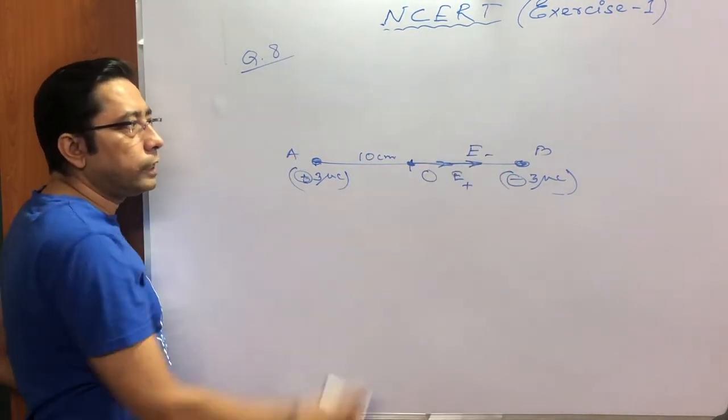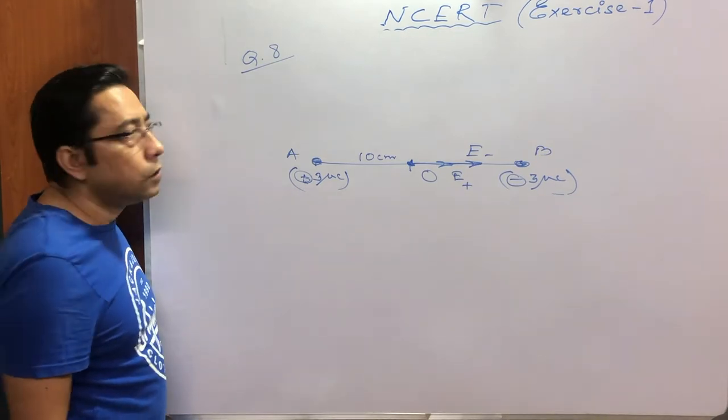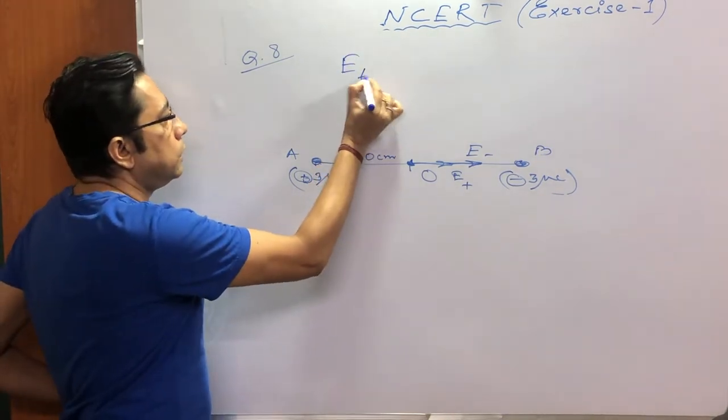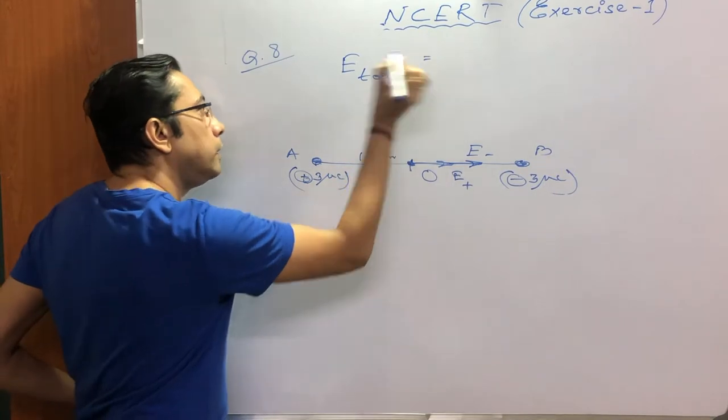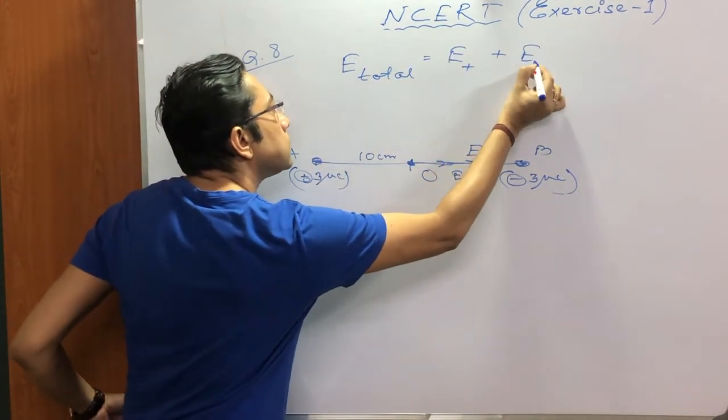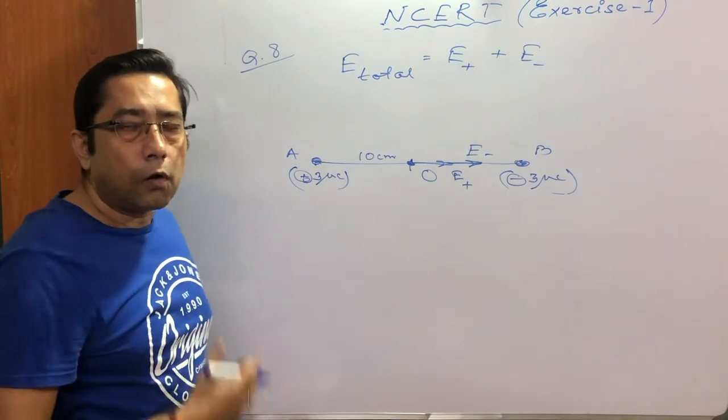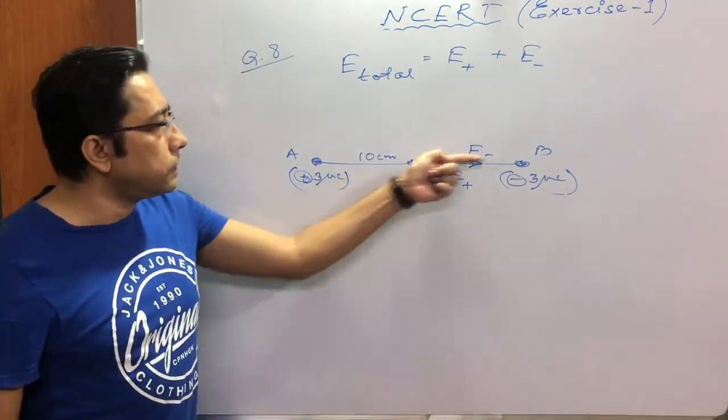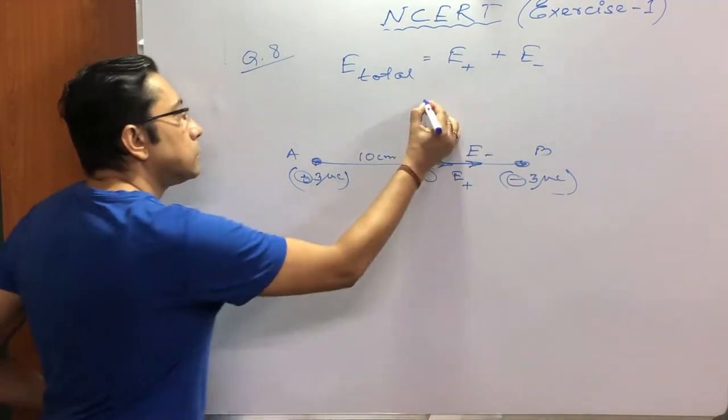Can we see that both the electric fields are in the same direction? So we can easily say that total electric field or net electric field would be the sum of E plus plus E minus. Vector sum or normal sum? Normal sum because they are acting in the same direction.